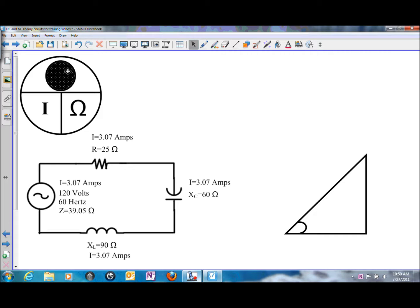voltage drop on the resistor, the capacitor, and the inductor by applying the same total current of 3.07 amps times the appropriate ohm values to get the voltage drops on those components.